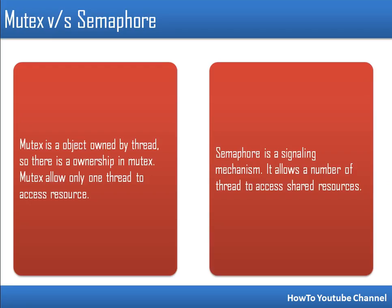So, mutex is an object owned by a thread — the thread holding the mutex can access the resource and enter the critical section. Whereas semaphore is a signaling mechanism that controls the maximum number of simultaneous accesses allowed. There is no ownership in semaphore, but in mutex there is ownership. Thank you very much for watching.